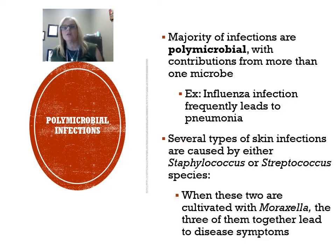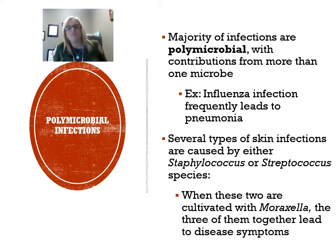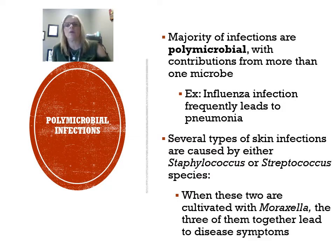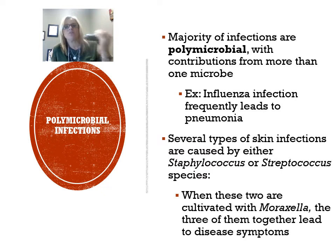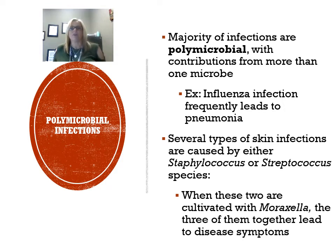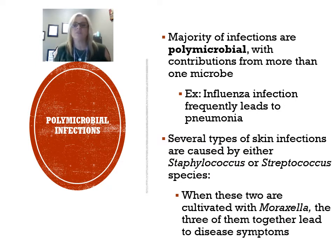Later on we'll discuss Koch's postulates, which are very important in isolating and identifying which organism causes an infection — especially important since we have so many normal microbiota. We can also have a polymicrobial infection, meaning poly — many — microbes causing an infection. An example is influenza, a virus, followed by a secondary pneumonia infection caused by a bacterium. If you have staph and strep on the skin, that can cause an infection; having Moraxella can also increase the virulence of the staph and strep, and the three together can lead to symptoms.